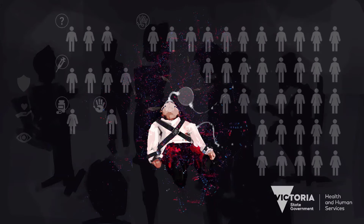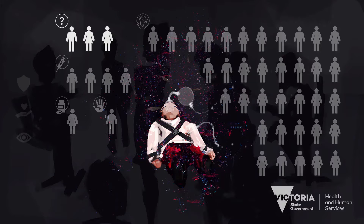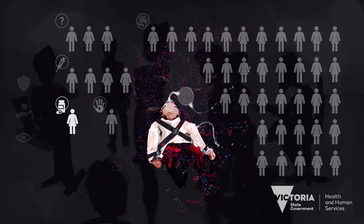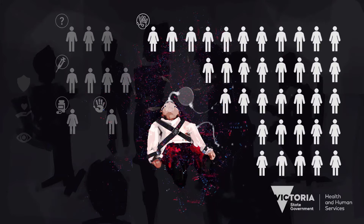An audit of inpatient deaths between 2011 to 2014 by the Victorian Chief Psychiatrist, Dr. Neil Coventry, found that out of 45 violent and undetermined deaths under community care, three deaths were of unknown causes, four were caused by drug overdose, one attributed to prescribed medication toxicity, one by homicide, and the remaining 36 deaths caused by suicide.